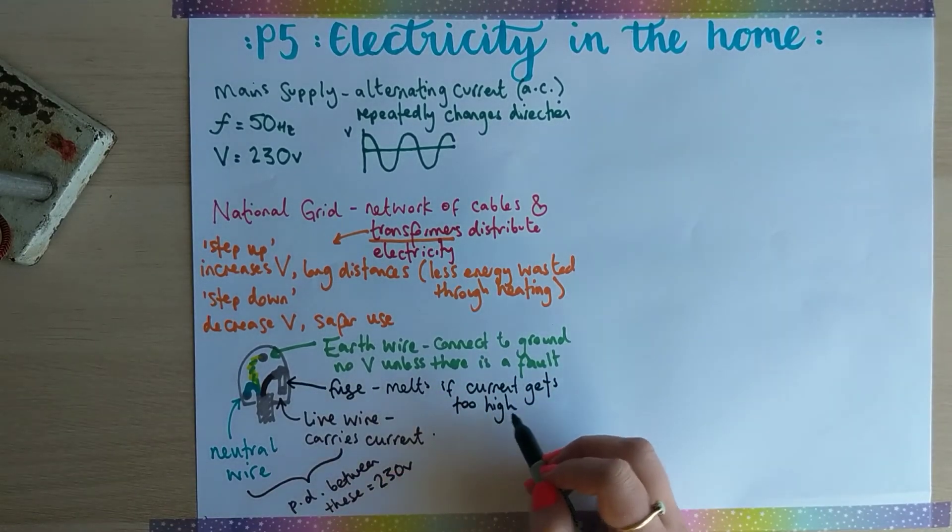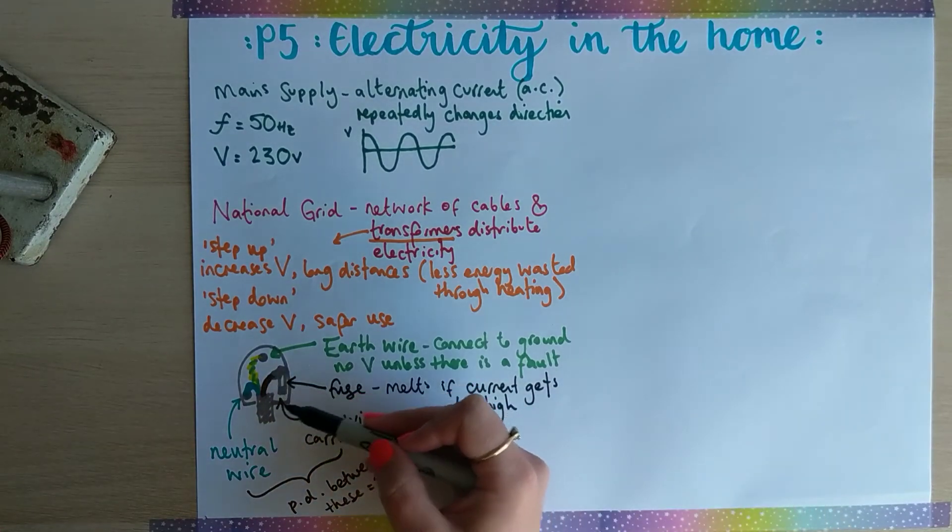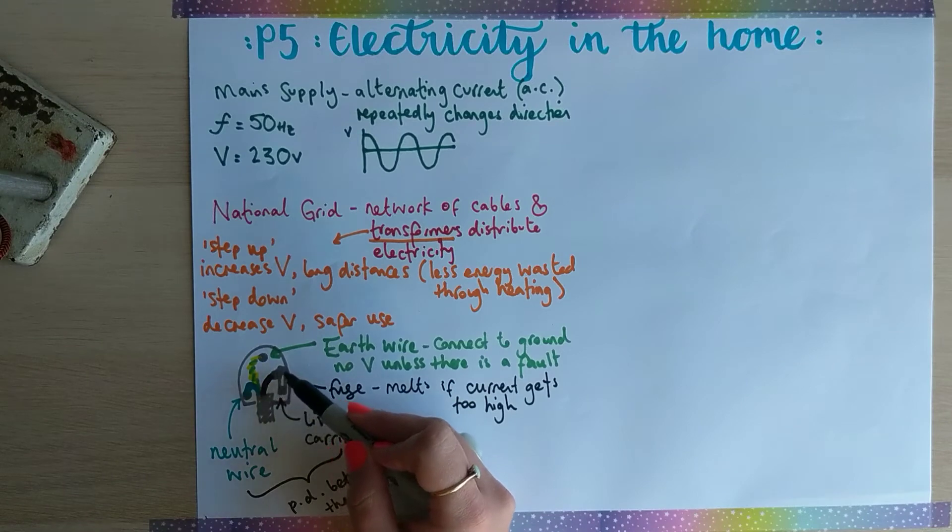It's a safety feature. If the current gets too high, the fuse melts and that breaks the circuit. The current would be going through the live wire; if the current gets too high it melts and then the current can't get through.